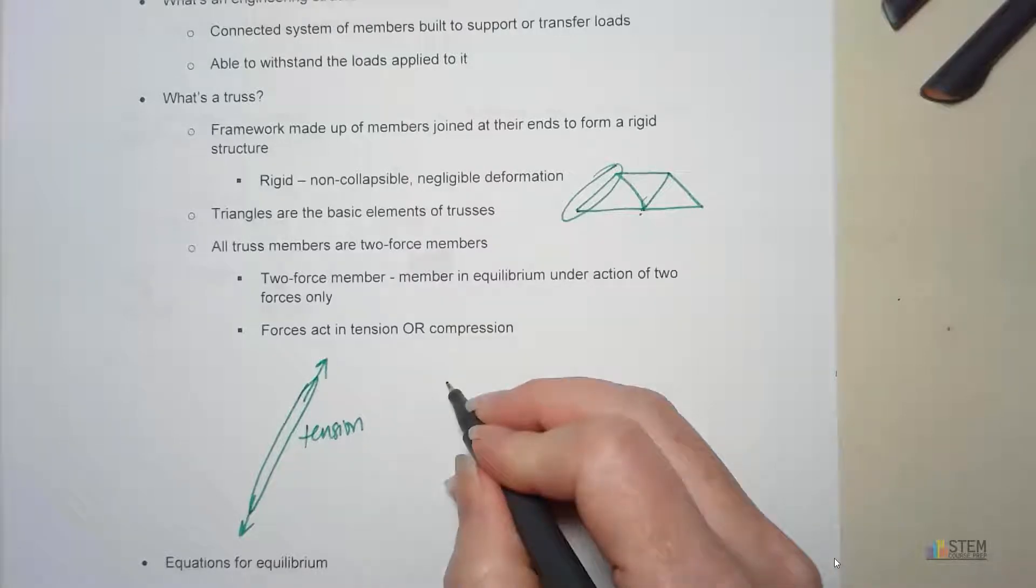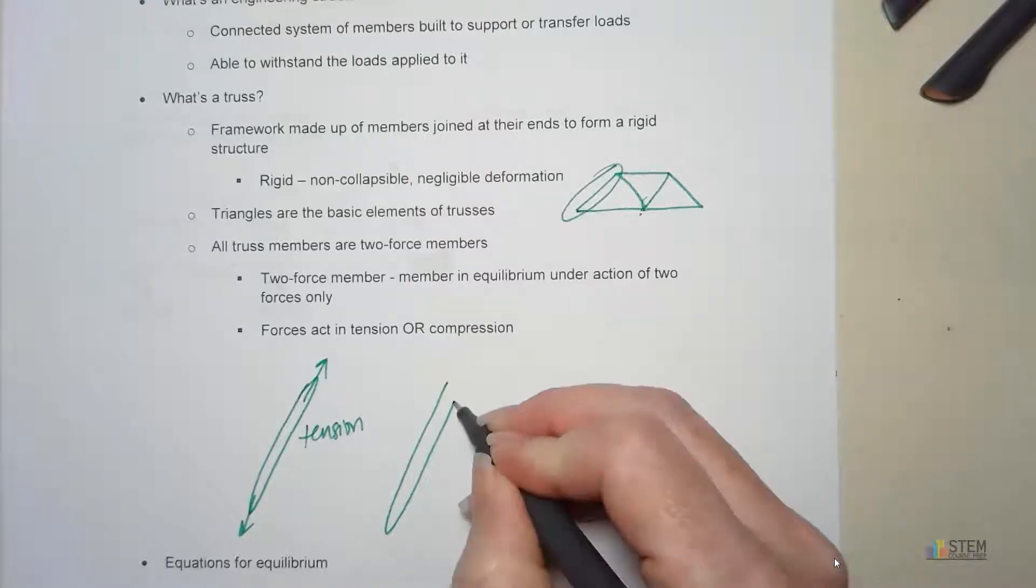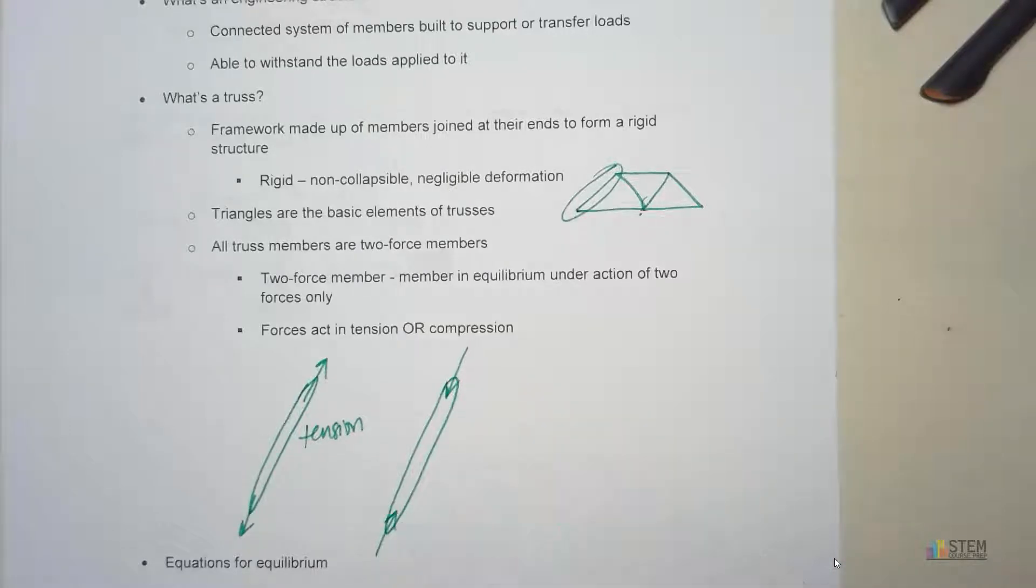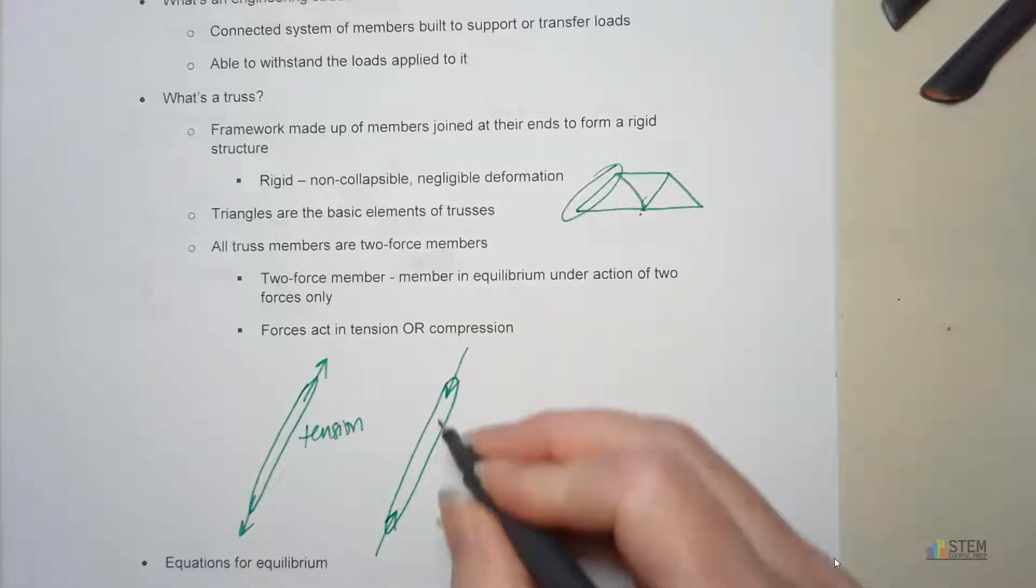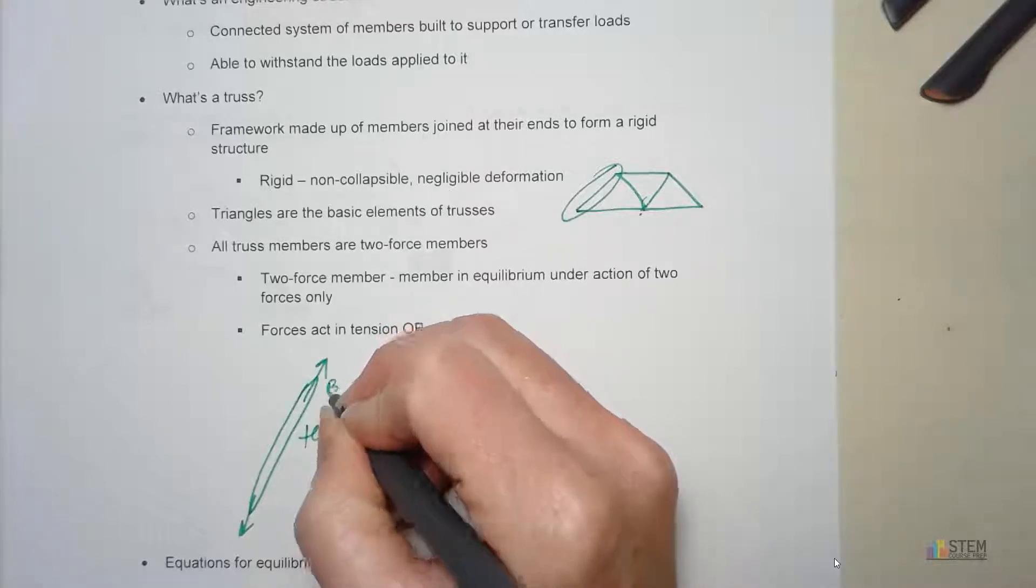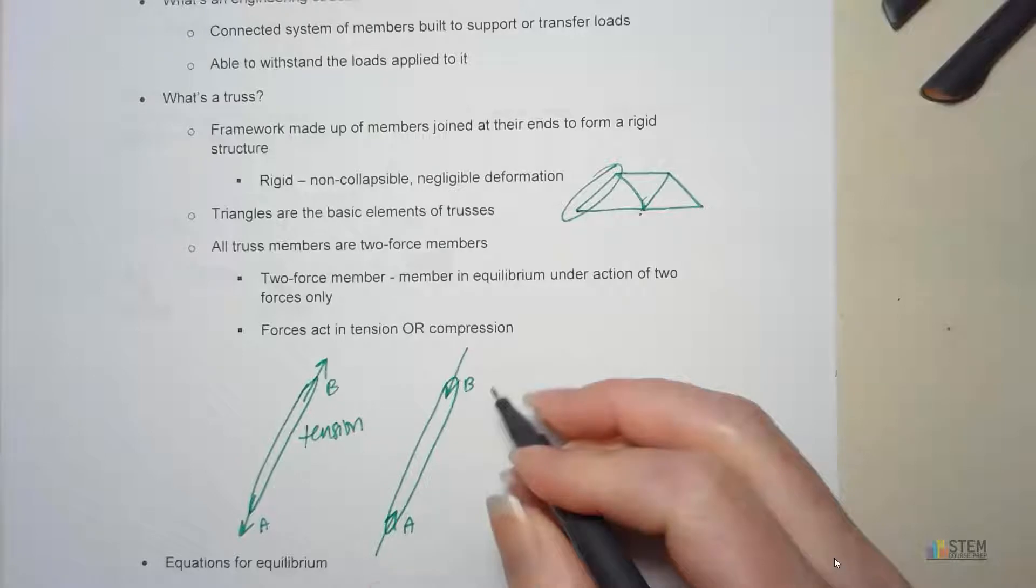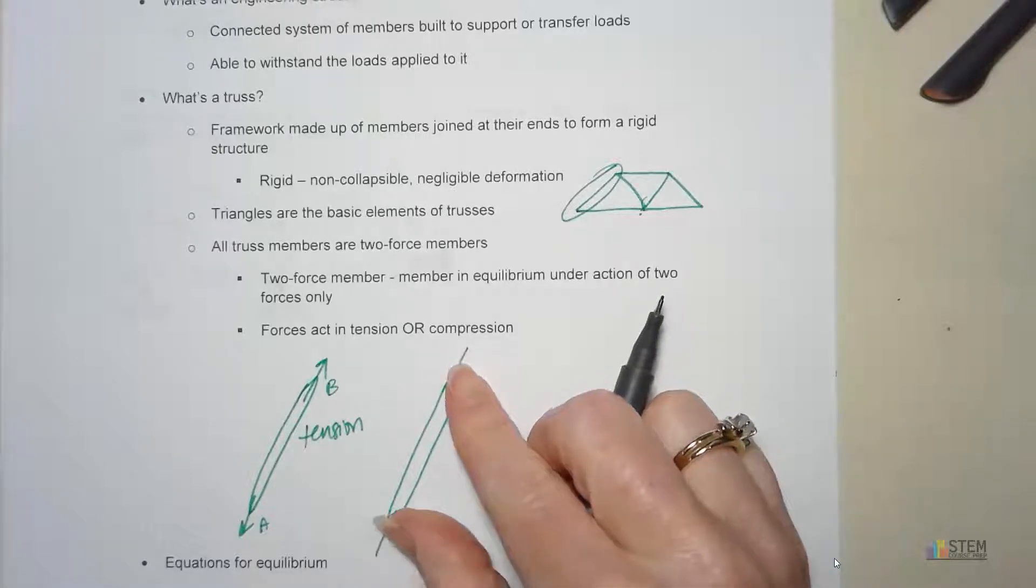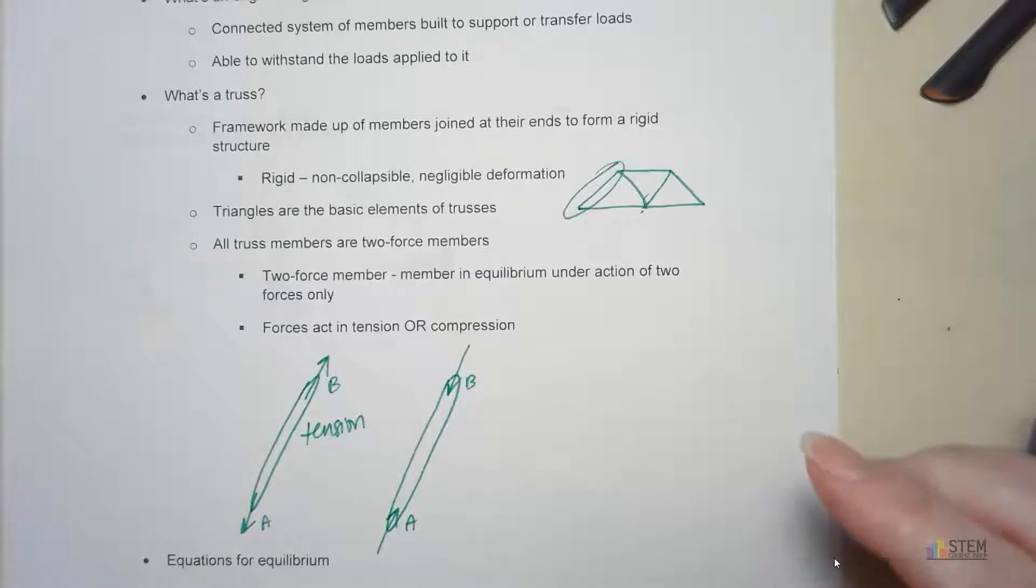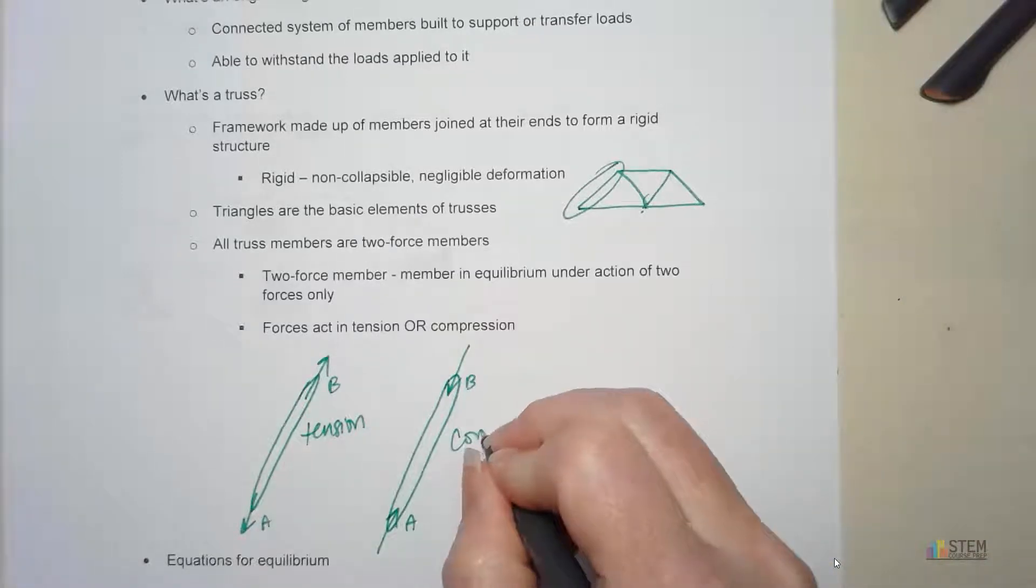Now the other one would be if we have two forces pointing inward. So this is B and this A. And we'll call this B and this A. So here, we've got the force, and the forces are pushing inward on that member. This is going to be compression.